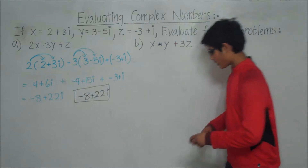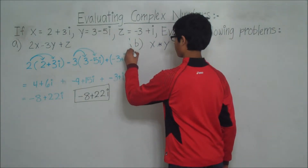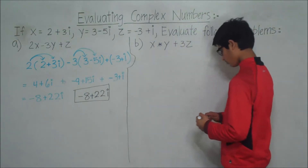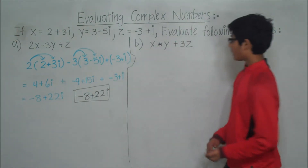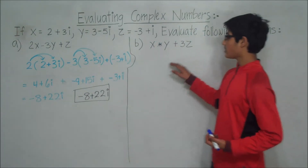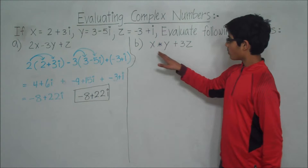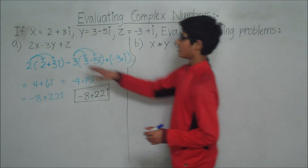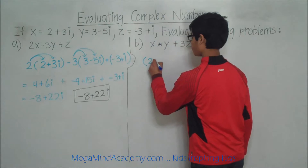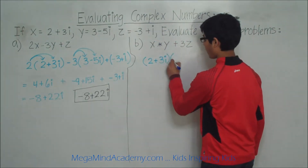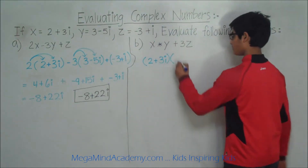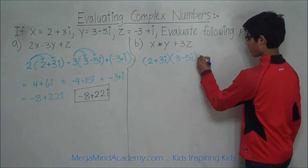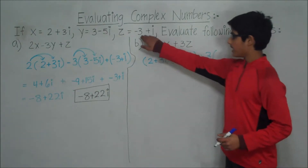Now let's move on to question B. Let's first rewrite question B, substituting the values of x, y, and z in their respective places. So we have x, which is 2 plus 3i, times y, which was 3 minus 5i, plus 3z, and z was negative 3 plus i.